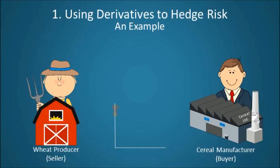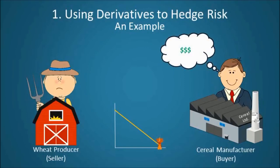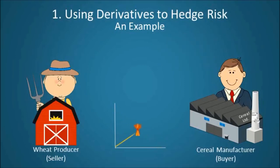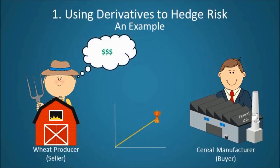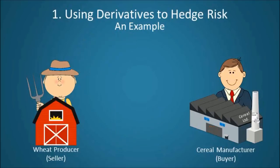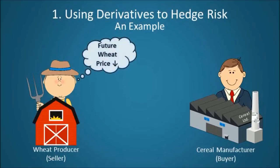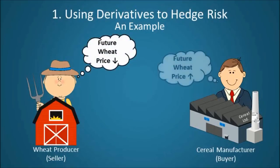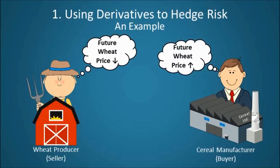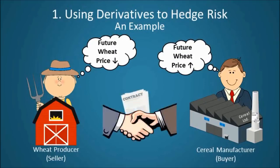A fall in the price of wheat is bad for wheat producers, because they can get less money for their crops, but is good for cereal manufacturers, because they can get one of their key inputs at a discount. On the other hand, an increase in the price of wheat is good for wheat producers, because they can get more money for their crops, but is bad for cereal manufacturers, because it increases costs. So, it is in the interest of wheat farmers that the price of wheat remains high, but it is in the interest of cereal manufacturers that the price of wheat remains low. Now, if a wheat producer expects that the price of wheat is about to fall, and a cereal manufacturer is of the opinion that the price of wheat is about to rise, the two parties can enter into a contract, fixing the future price at which the wheat will be sold.